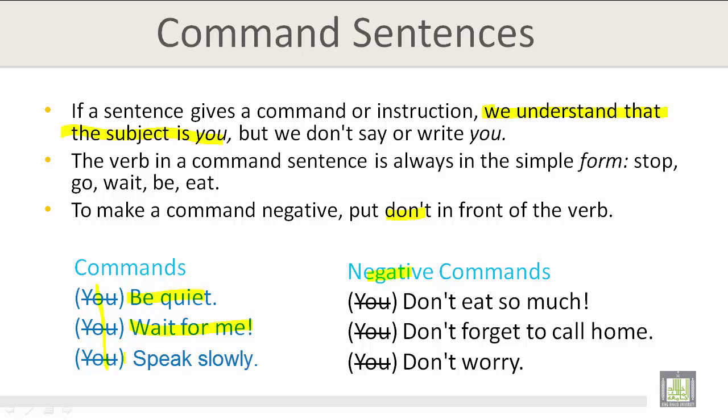To make a command negative, put 'don't' in front of the verb. For example, the command 'eat so much' becomes 'don't eat so much.' The command 'forget to call home' becomes 'don't forget to call home.' A third example: don't worry, it's okay.